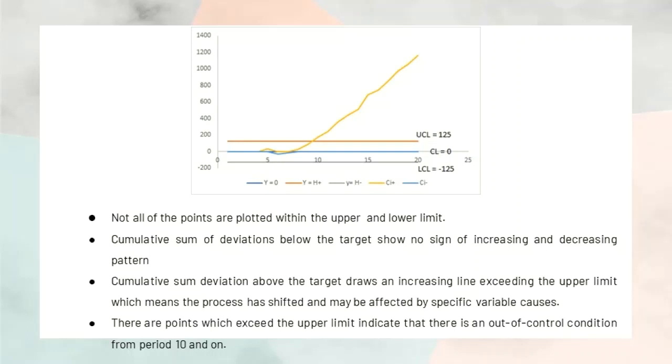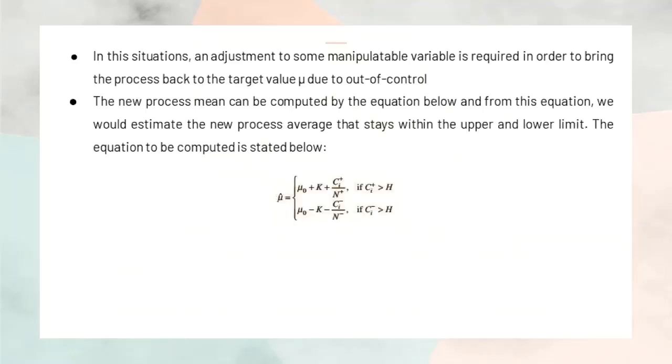But in the last 10 observations, the mean has shifted to mu equal to 1075 which is a strong upward trend indicating that there is an out of control condition from period 10 and on.